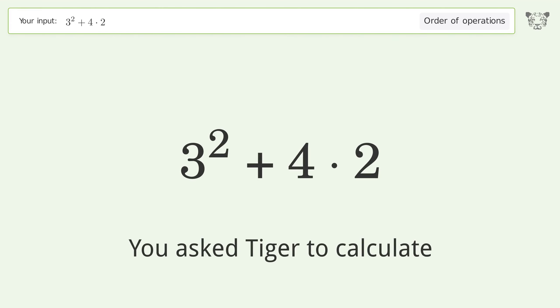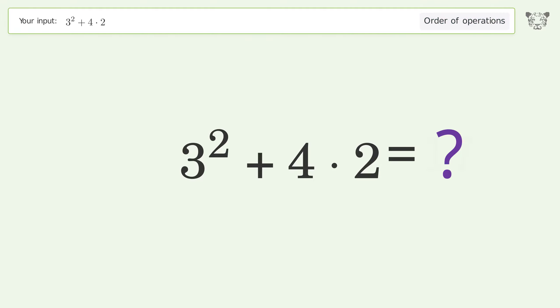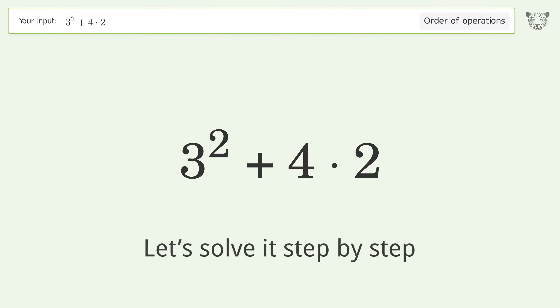You ask Tiger to calculate. This deals with the order of operations — the final result is 17. Let's solve it step by step.